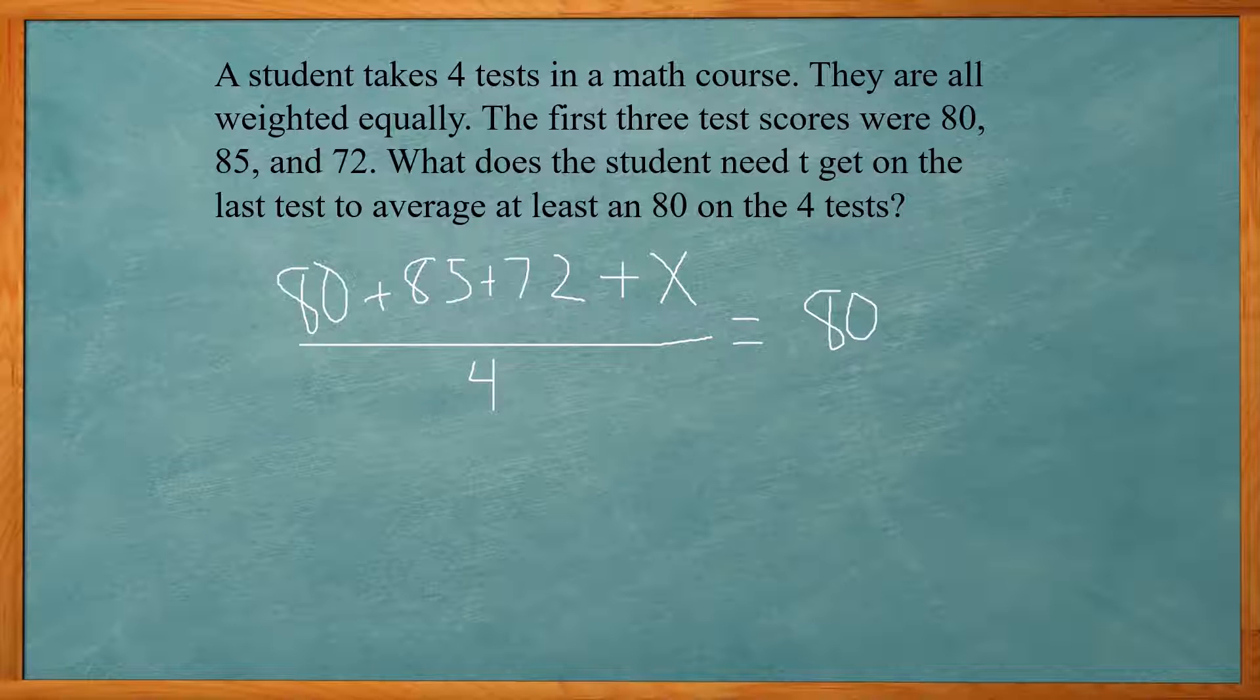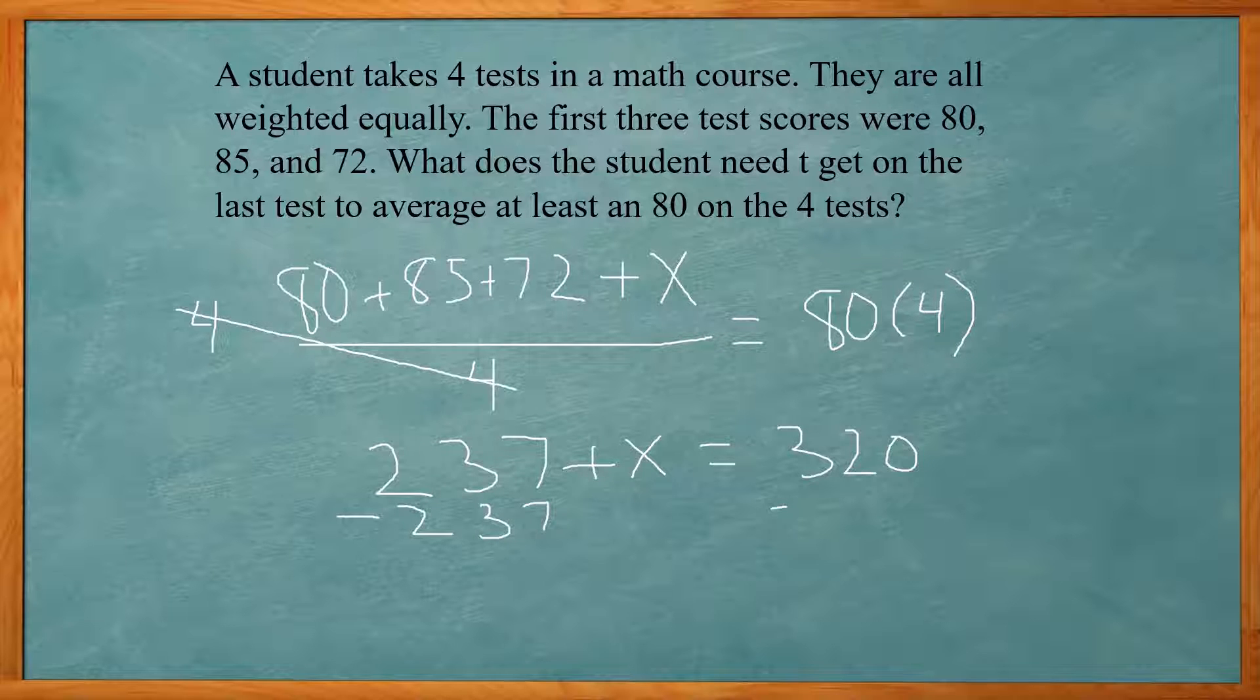So all we need to do here is solve for X. So the first thing we do is multiply both sides by four. That's going to cancel out the four here. All right, so now we have the 80 plus 85 plus 72. If I add those together, it gives me 237. So 237 plus X equals 320. And then subtract 237 from both sides. And then X will equal 83. So I need to get an 83 on the last test in order to get an 80 for their average.